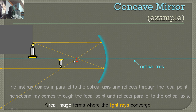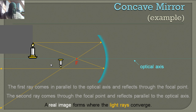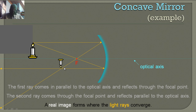So where these two reflected light rays intersect, that's going to be the top of the candle — and we can see it's upside down. Concave mirrors in this case form a real image because it's on this side of the mirror. If it were on the other side it would be virtual, but since it's on the same side as the object, we get a real image.